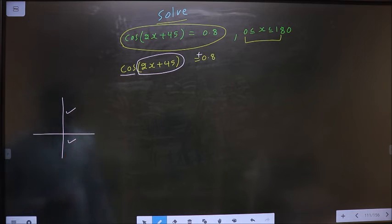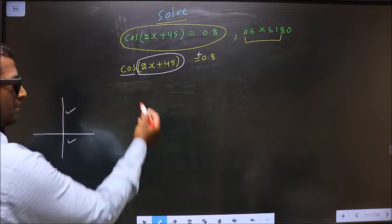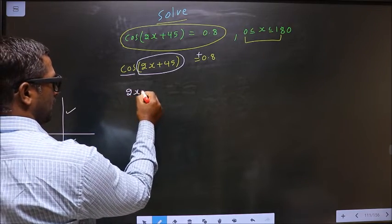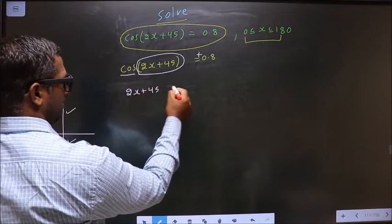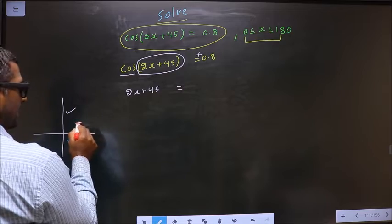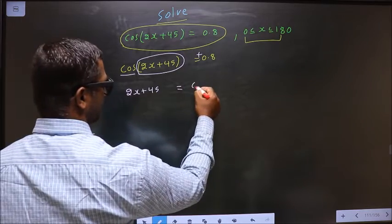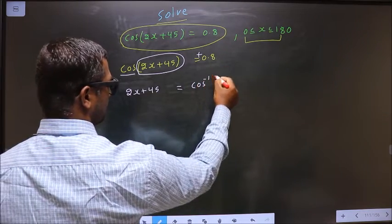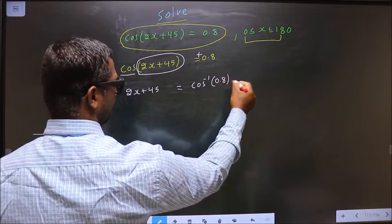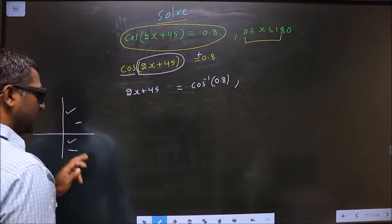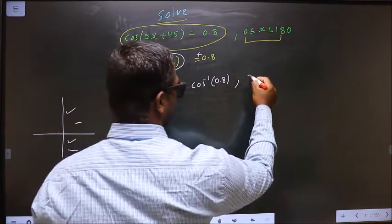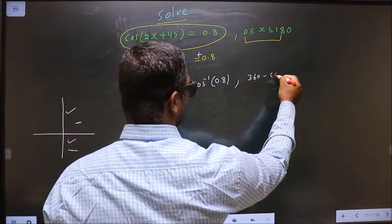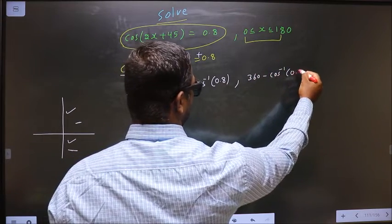So 2x + 45 equals—to get an angle in the first quadrant we do directly cos inverse 0.8. To get an angle in the fourth, we should do 360 minus cos inverse 0.8.